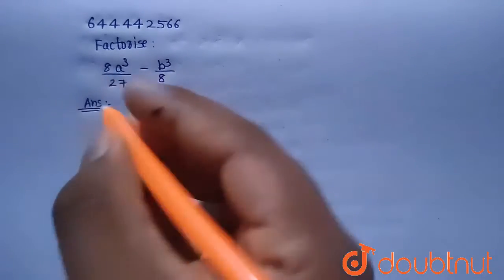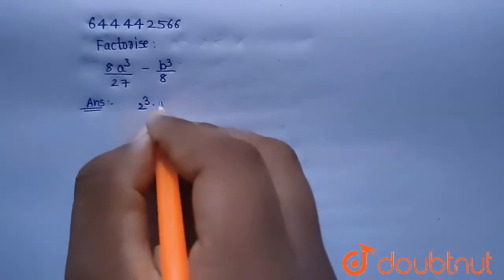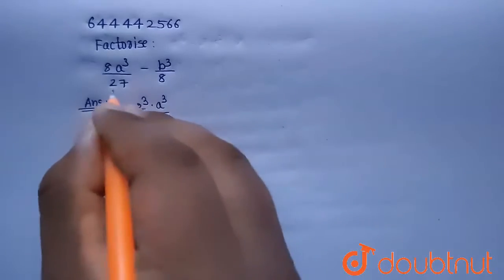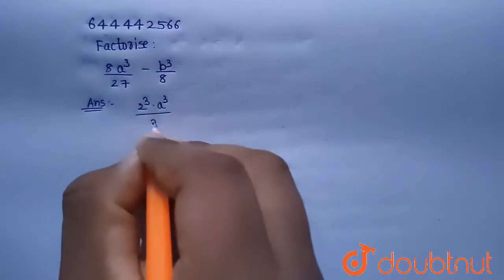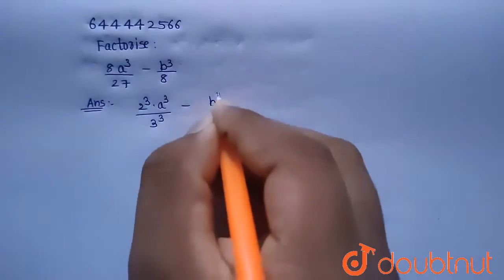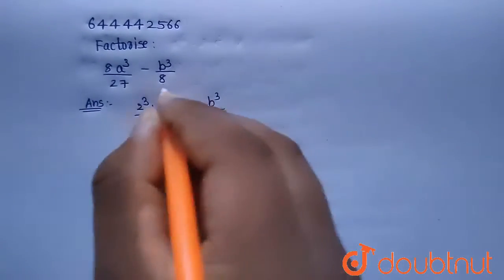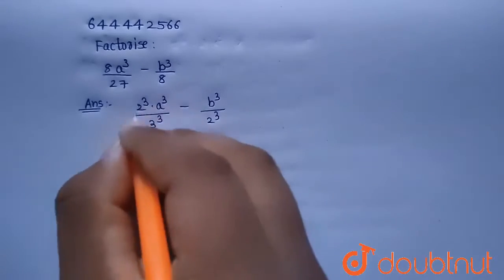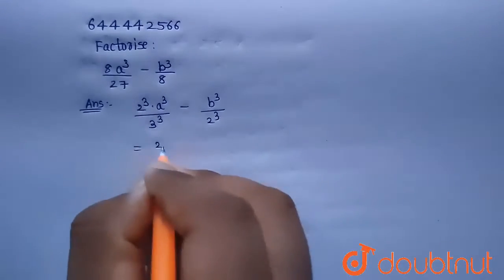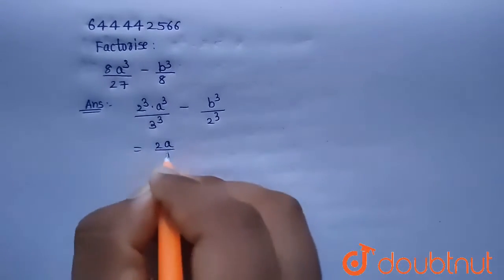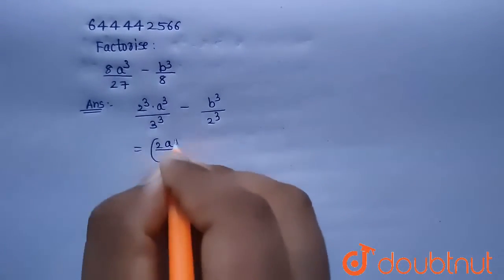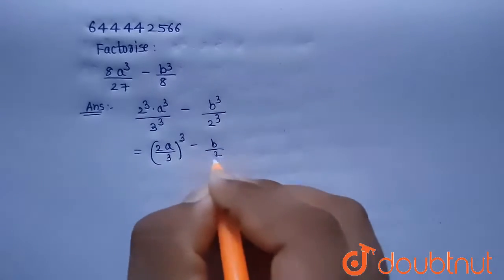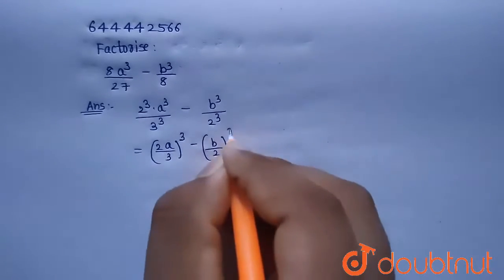Now we can write 8 as 2 cube multiplied with A cube, and 27 as 3 cube, minus B cube. Similarly, 8 can be written as 2 cube. So the whole expression can be written as (2A/3) whole cube minus (B/2) whole cube.